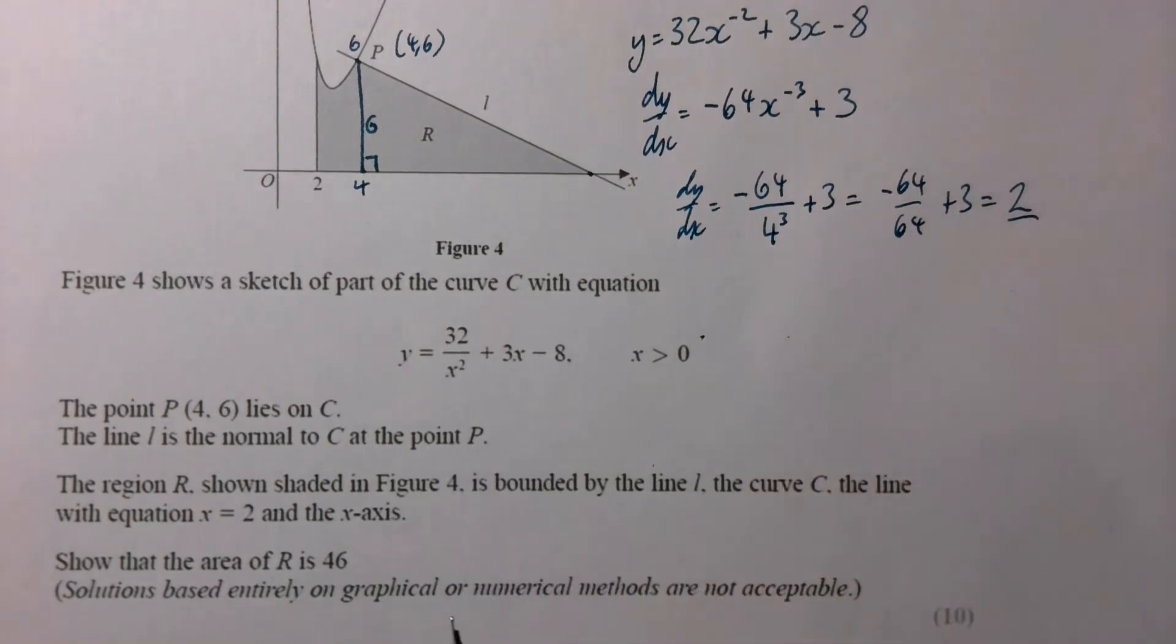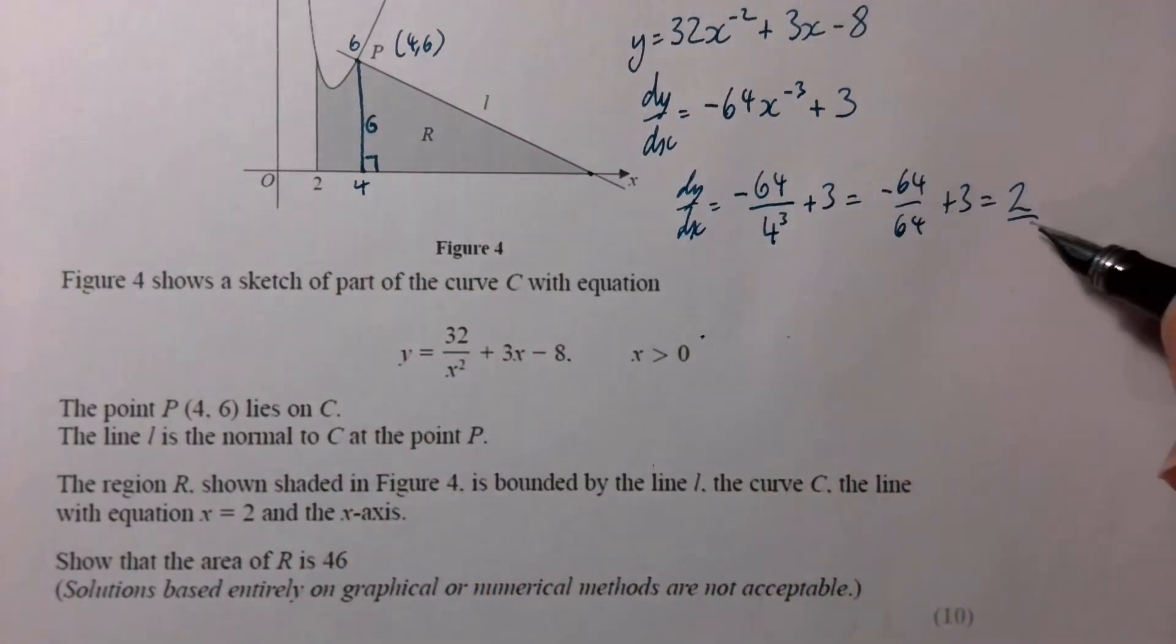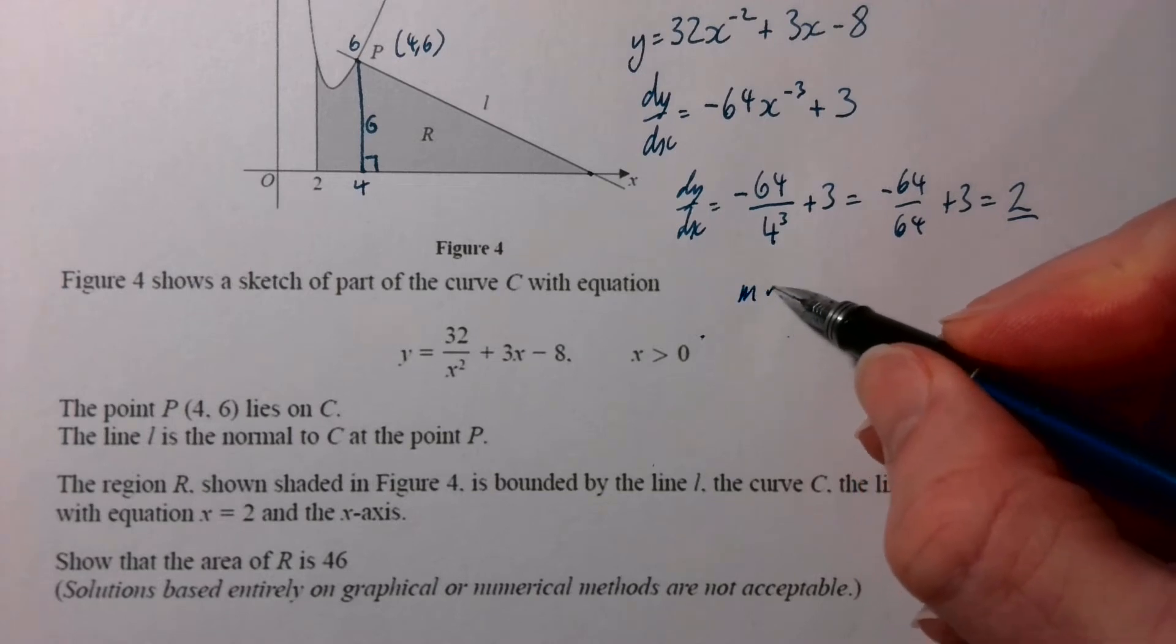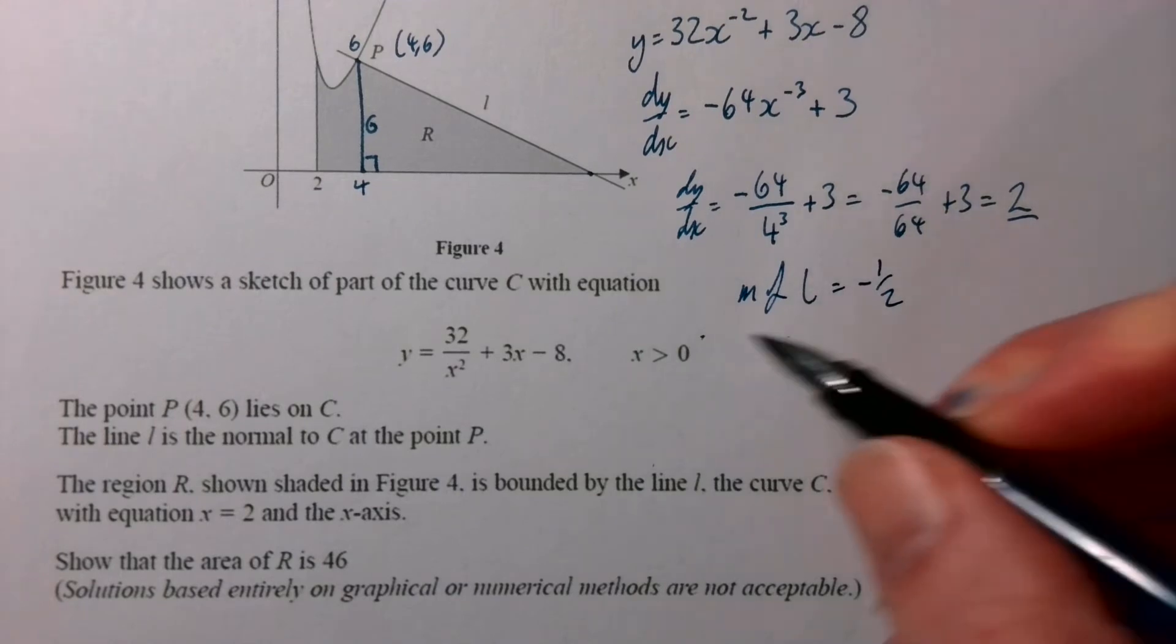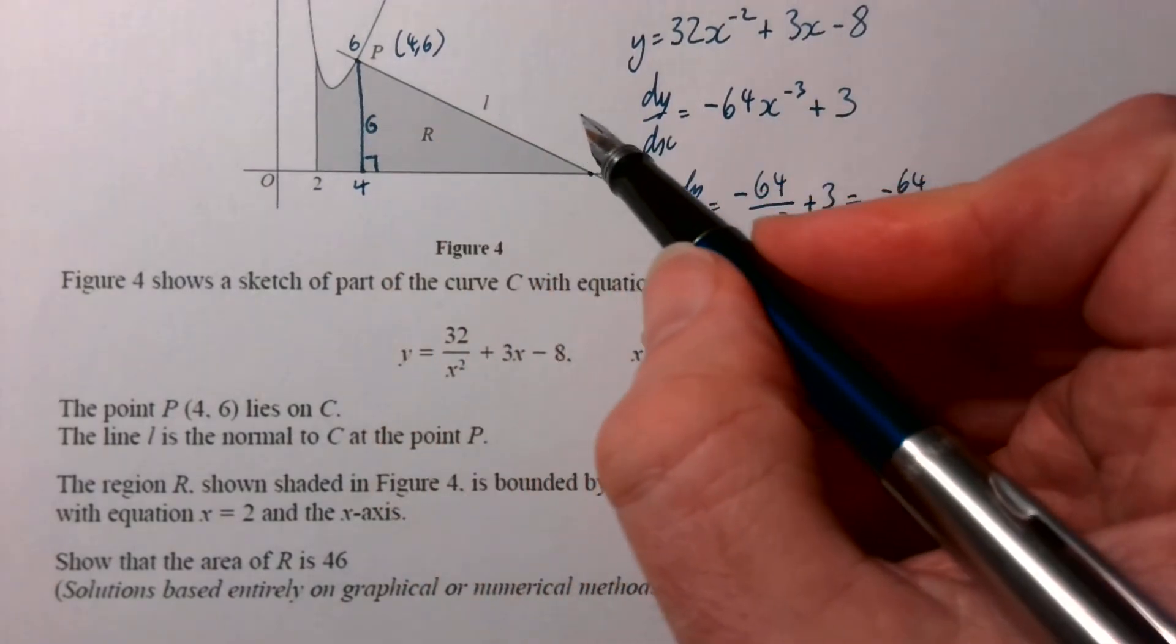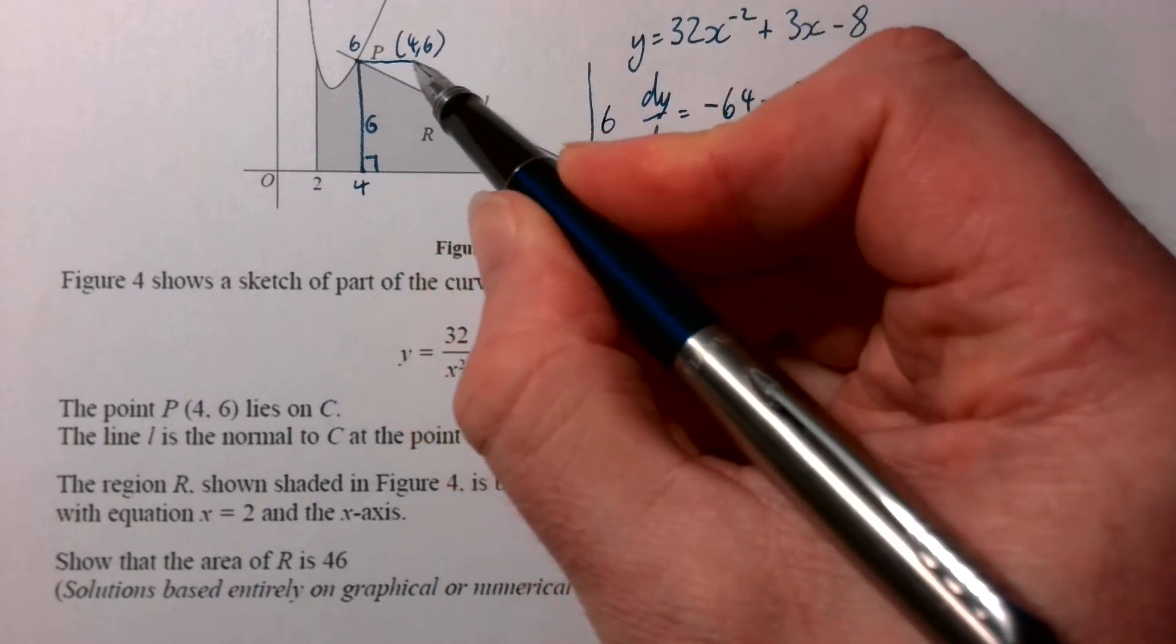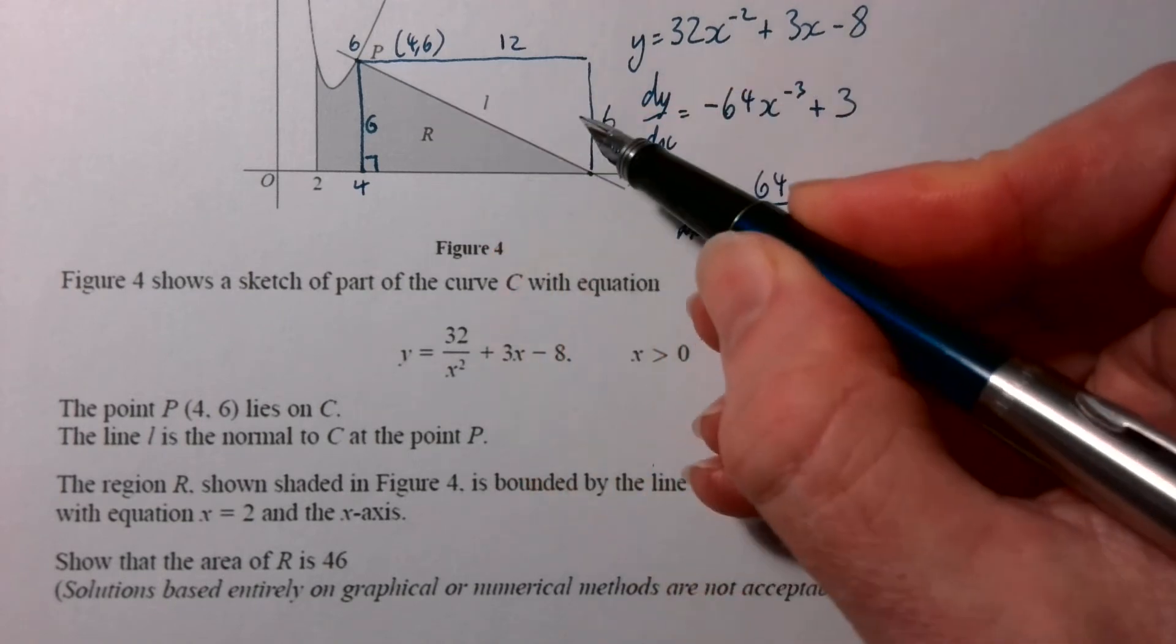As that is perpendicular to - it says the line here is the normal to C, so normal to it means perpendicular. So the gradient, or M of L, is going to be negative 1/2. So if that's negative 1/2, and it's going to go down 6, it must have gone along 12 beforehand, because 6 over 12 is 1/2. It's going down.